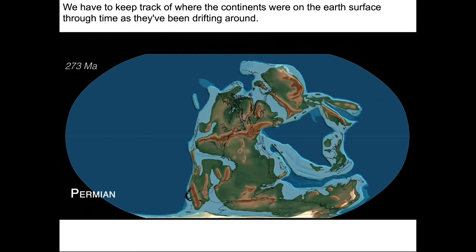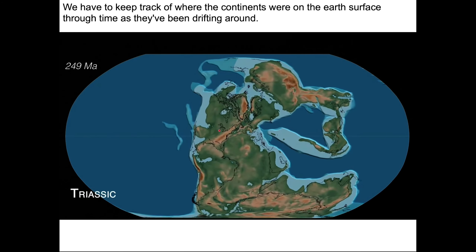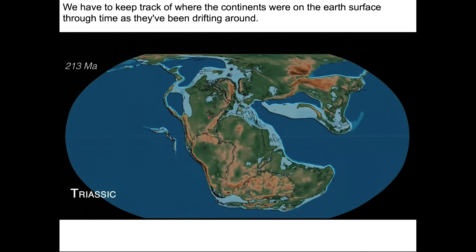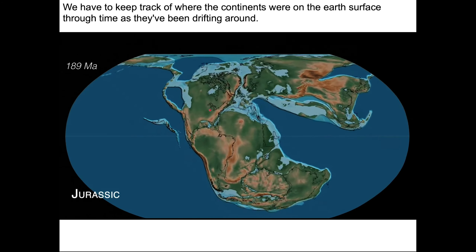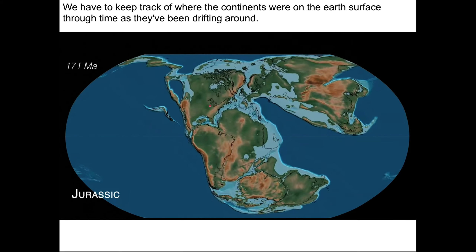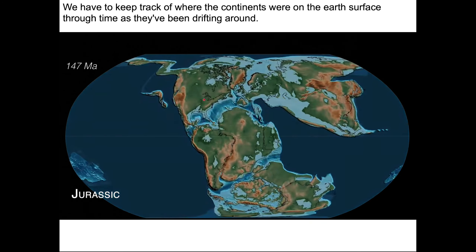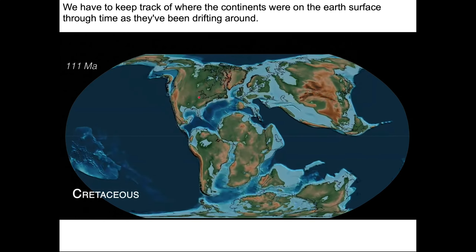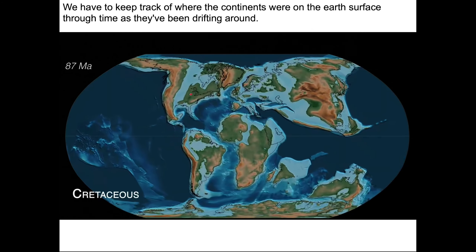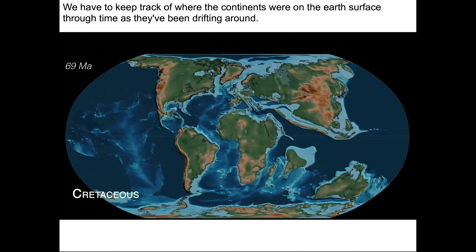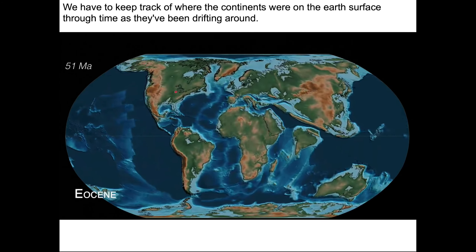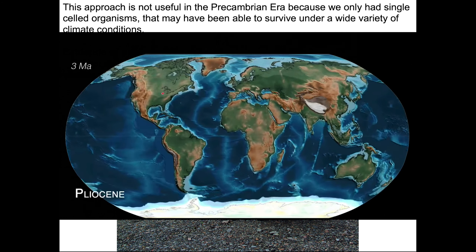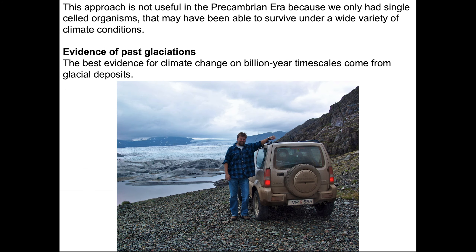To better understand fossils recovered from geological deposits, we must track where the continents were on Earth's surface when those fossils were generated. A reconstruction like this from Chris Scotese shows there is a lot of possibility for apparent climate change that's unrelated to any real change in atmospheric chemistry — it's just the position of the continents, whether you're near the poles or the equator. This approach isn't useful for the Precambrian because we only had single-celled organisms that could survive in ice or hot water.